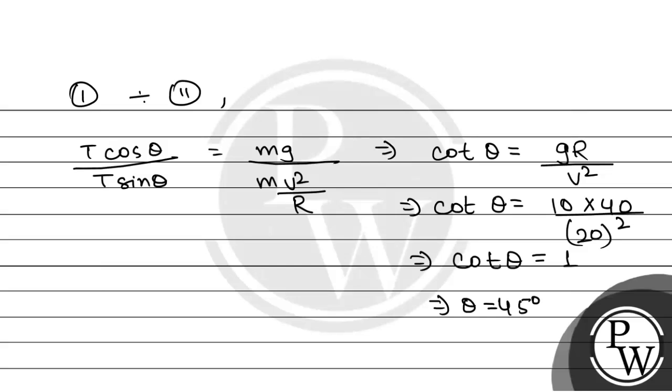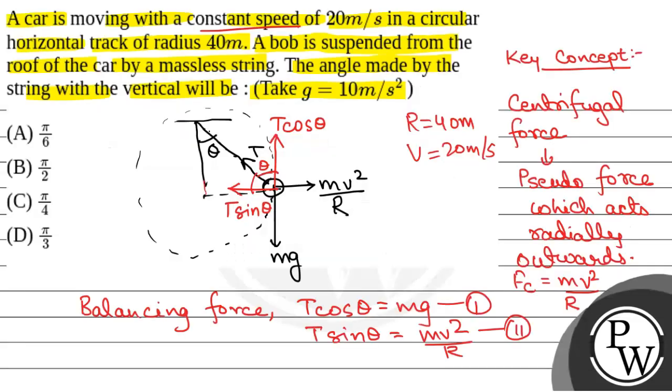That is the angle theta will be equal to 45 degrees, that is pi by 4. So this will be the correct option. The correct option is option C. Hope you all understood it well. Best of luck.